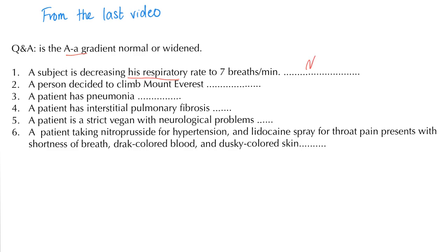A person decided to climb Mount Everest — this is high altitude, therefore less oxygen in the atmosphere, but the lung is normal. The AA gradient is normal. A patient has pneumonia — the lung is abnormal, so the AA gradient is widened. A patient has interstitial pulmonary fibrosis — the lung has a problem, so the AA gradient is widened.